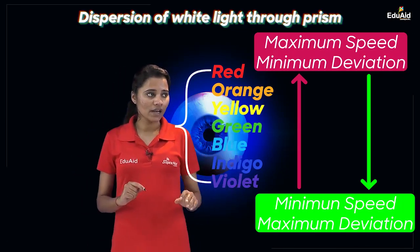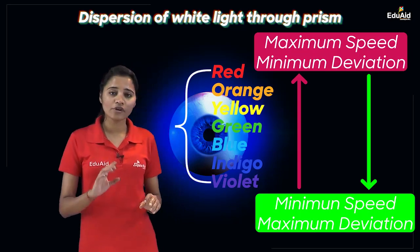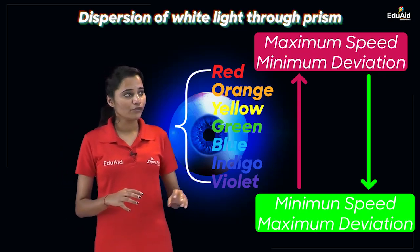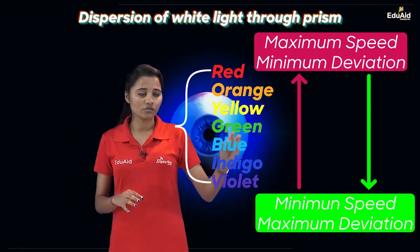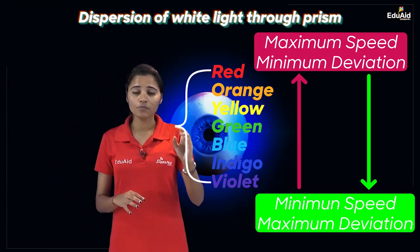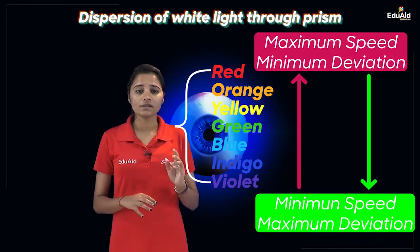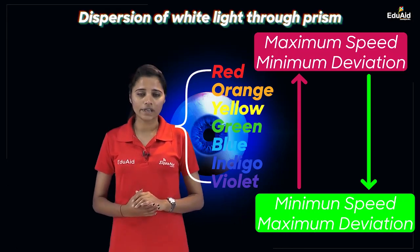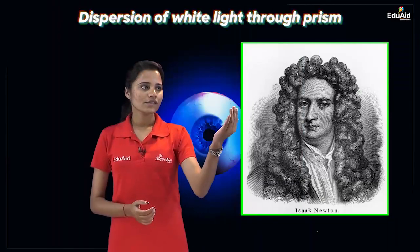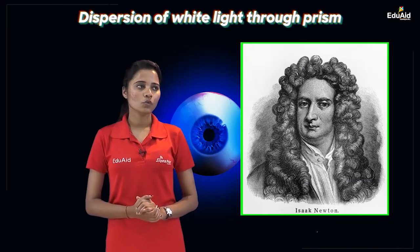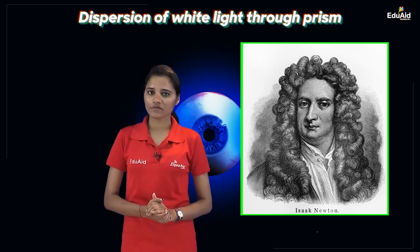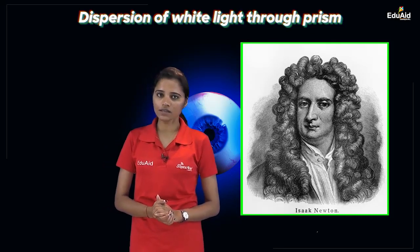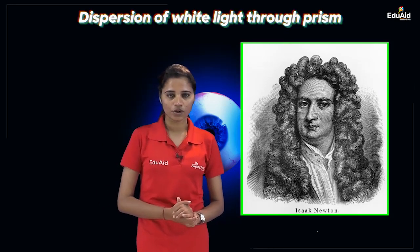So for any light, if you get a spectrum, then that particular light is nothing but white light. Sir Isaac Newton was the first to obtain the spectrum of sunlight using a glass prism.